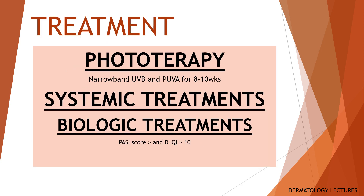Ultraviolet light therapy is helpful for extensive psoriasis, psoriasis unresponsive to topical therapy, and guttate psoriasis. Narrowband ultraviolet B and psoralen plus ultraviolet light A (PUVA) are commonly prescribed. Patients are required to attend 2 or 3 times a week for 8 to 10 weeks. Treatment is usually very effective, but the duration of remission is variable. The number of lifetime treatments is limited to minimize the risk of skin cancer.